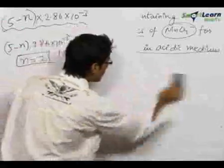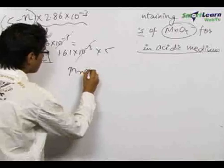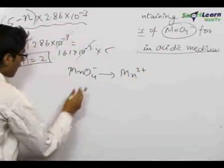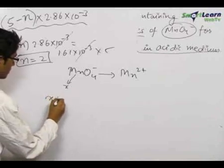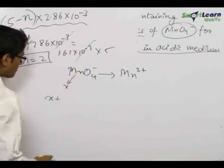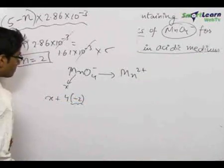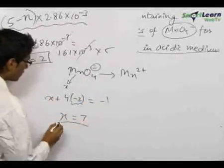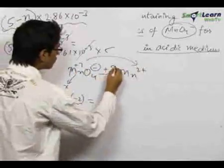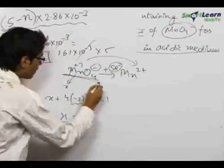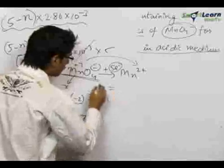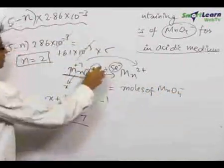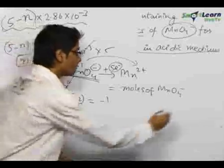Let us recap the equivalent concept used here. In our question, MnO₄⁻ acting as the oxidizing agent was getting converted into Mn²⁺. The oxidation state of Mn in MnO₄⁻: let X be the oxidation state, so X + 4 × (−2) = −1, giving X = 7. So, Mn⁺⁷ was getting converted into Mn²⁺, hence 5 electrons were getting transferred. The number of equivalents of MnO₄⁻ equals moles of MnO₄⁻ × N-factor, where N-factor is 5, defined as the number of electrons getting transferred during the reaction.